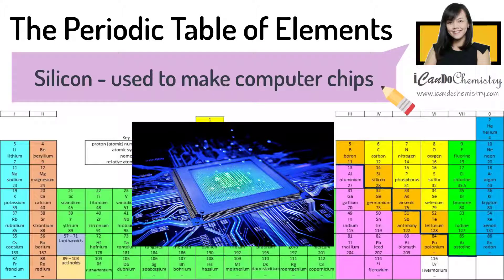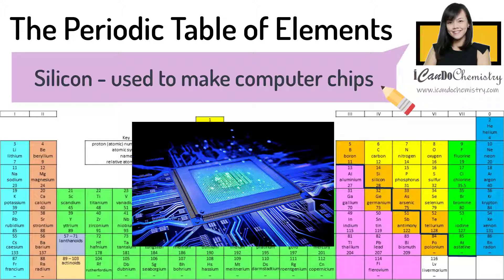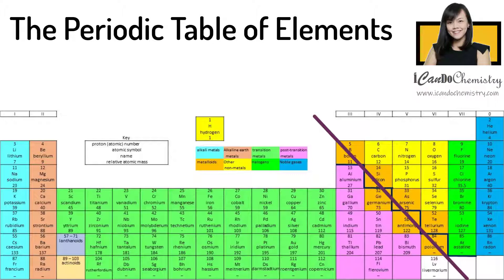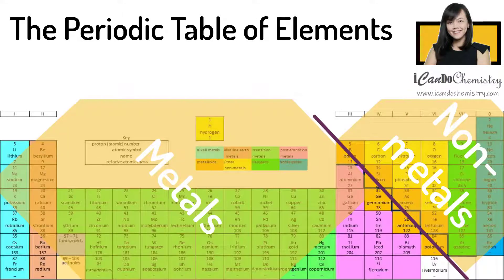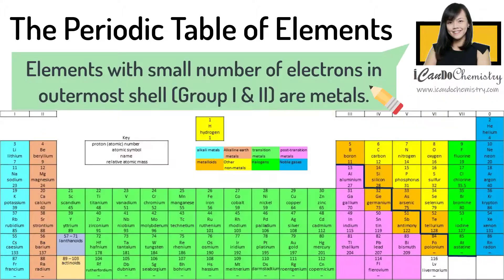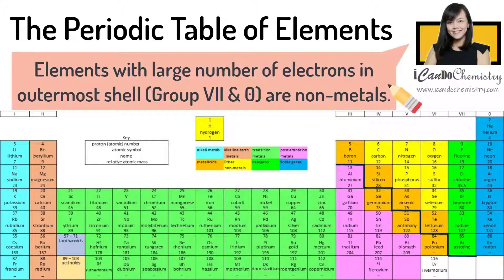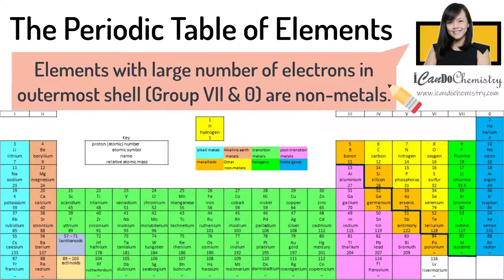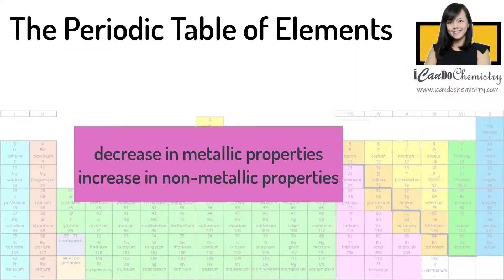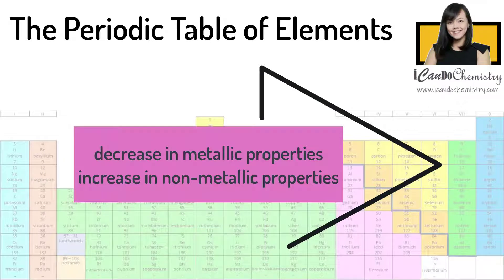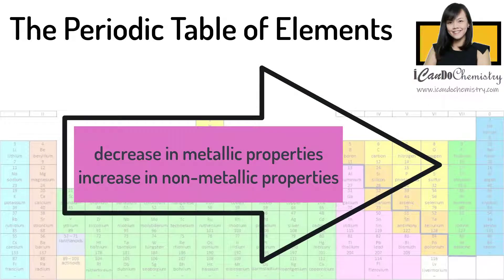It is widely used in semiconductor industry which makes chips for computers. On the left-hand side of this diagonal line, we have metals and on the right-hand side, we have non-metals. So in general, elements that have a small number of electrons in their outer shell are actually metals and elements with a large number of electrons in the outer shell are non-metals. So from left to right, across a period, there is a decrease in metallic properties and increase in non-metallic properties.